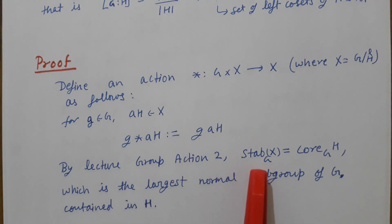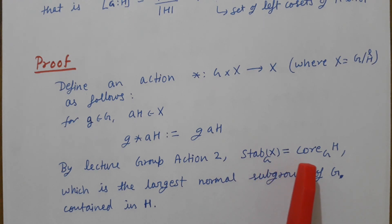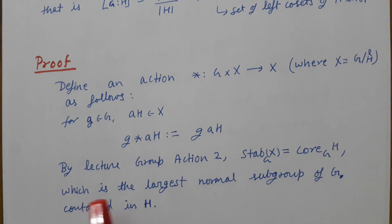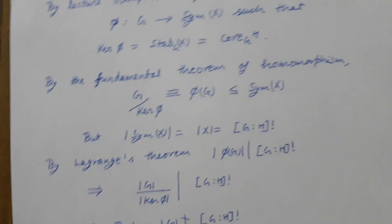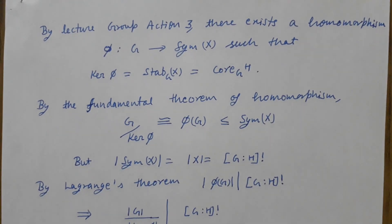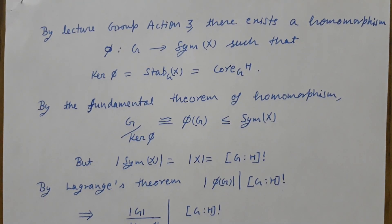In Lecture 2 we showed that the stabilizer of x in G is equal to the core of H in G for this action. The core of H in G is the largest normal subgroup of G contained in H.